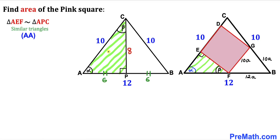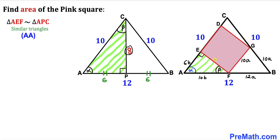Since triangles AEF and APC are similar, their sides are proportional. Corresponding to the side of length 10 in APC, side AF becomes 10B. Corresponding to the side of length 6, side AE becomes 6B. And corresponding to the side of length 8, side EF becomes 8B, where B is a scaling constant.